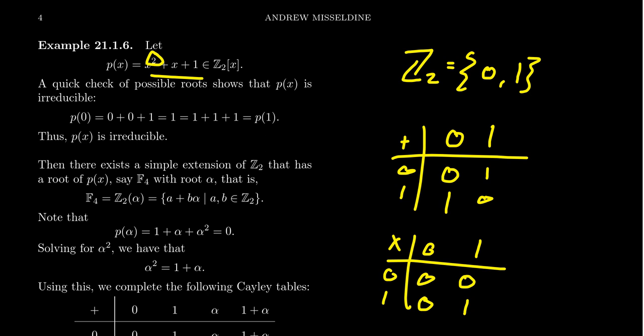Z2 has only two numbers, 0 and 1, which are the only possible roots to check. Plugging in 0: 0+0+1=1 mod 2, so 0 is not a root. Plugging in 1: 1+1+1=3=1 mod 2, so 1 is not a root either. We brute-force checked every possible number — there are only two. Since x²+x+1 has no root, and quadratic polynomials must have a linear factor and hence a root in order to reduce, this polynomial is irreducible.